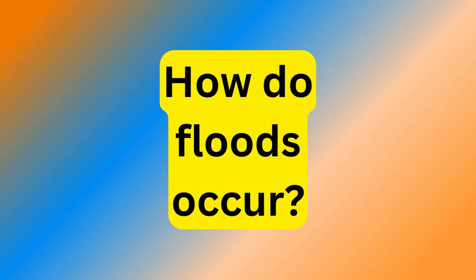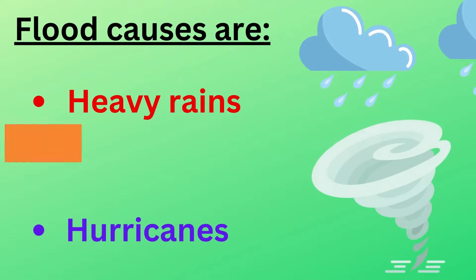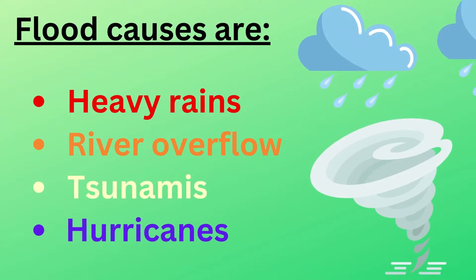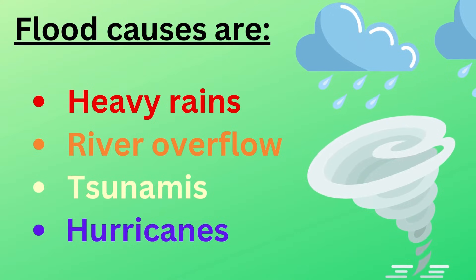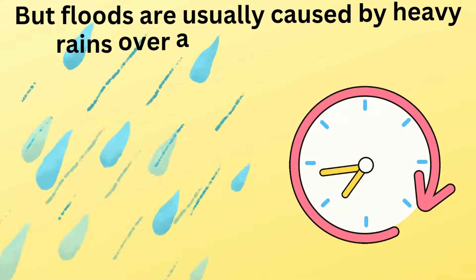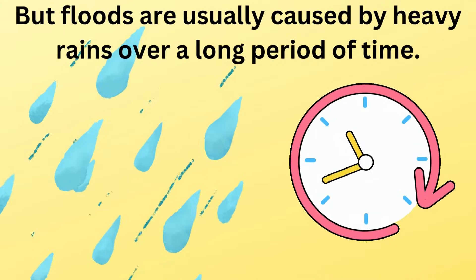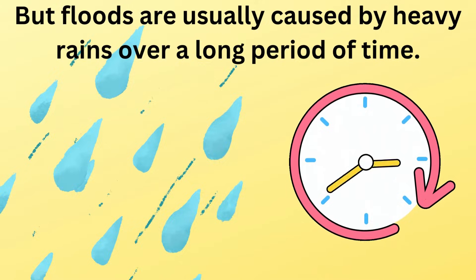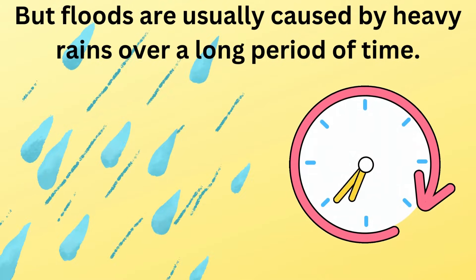How do floods occur? Flood causes are heavy rains, river overflow, tsunamis, and hurricanes. But floods are usually caused by heavy rains over a long period of time.